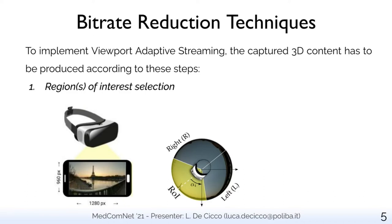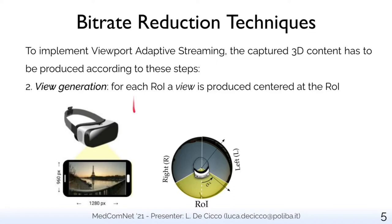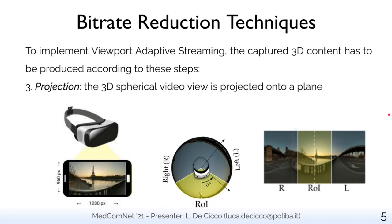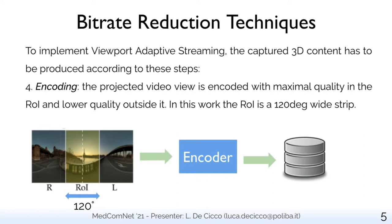To implement viewport adaptive streaming, the content has to be produced according to the following steps. First, one has to select the region or regions of the video that the user is supposed to be interested in. This step entails, for instance, the use of saliency maps built by considering users' head positions traced by the video provider. In this work, we consider the region of interest, or ROI, as given. Second, for each ROI, a view is produced centered at the ROI. Then, in the projection phase, the 3D spherical video view is projected onto a plane — in this work, the equirectangular projection is used. In the fourth phase, the view is encoded according to a content-aware compression scheme that assigns maximal quality to the ROI area and lower quality outside it. We consider an ROI area 120 degrees wide, which mimics the typical field of view of the human eye.